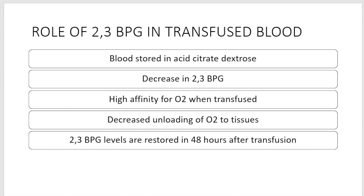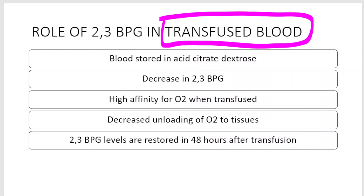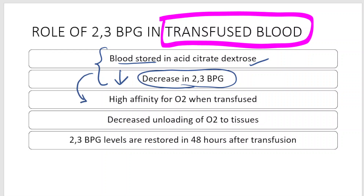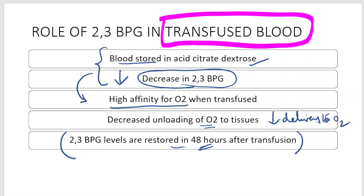What is the role of 2,3-bisphosphoglycerate in transfused blood? Blood is stored in acid citrate dextrose, and during storage the 2,3-bisphosphoglycerate content decreases. When this stored blood is transfused to a patient, there is high affinity for oxygen but very little unloading of oxygen to the tissues, resulting in reduced oxygen delivery to the peripheral tissues. In normal individuals, 2,3-bisphosphoglycerate levels can be restored within 48 hours after transfusion.